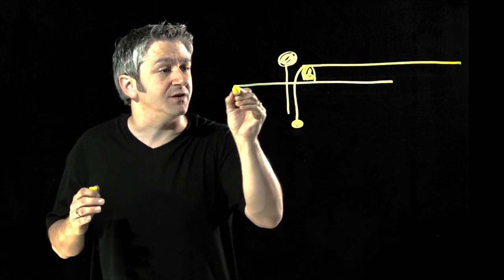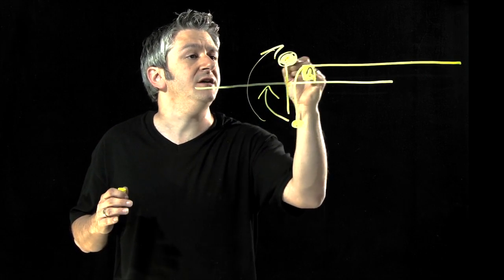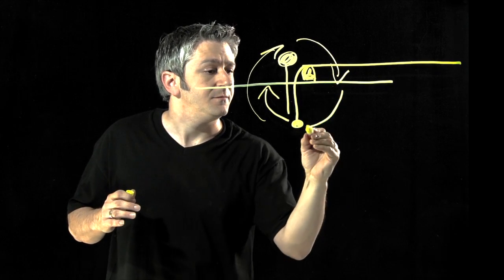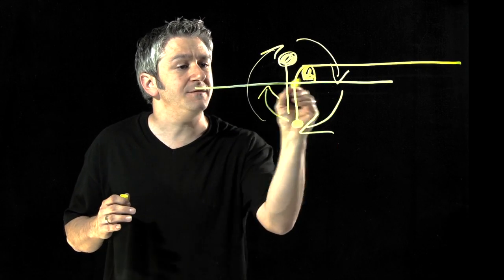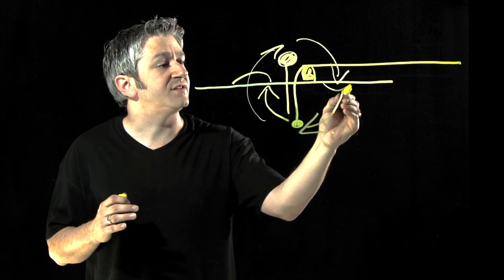So if this is the top of the guitar, really this all starts to look like a big circle here. And what happens is behind the bridge, it wants to belly up, and in front of the bridge, it wants to cave in.